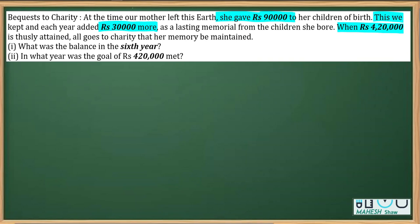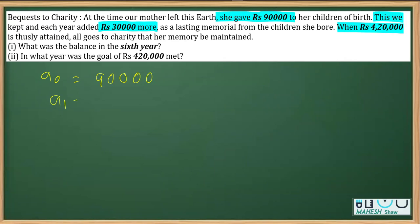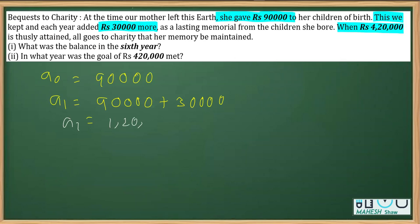We have to find the balance in the sixth year. This is a question of arithmetic progression, so we say a₀ — that is, at the time of birth — is ₹90,000. Therefore a₁, that is after one year when the child is one year old, is ₹90,000 plus ₹30,000, because ₹30,000 is added each year. So we get a₁, the first term, as ₹1,20,000.